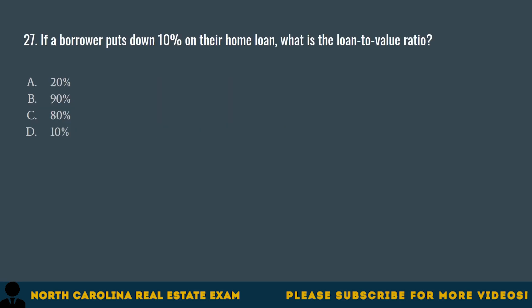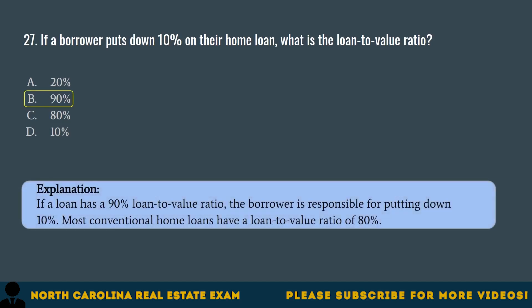Question 27. If a borrower puts down 10% on their home loan, what is the loan-to-value ratio? A. 20%. B. 90%. C. 80%. D. 10%. The correct answer is B. 90%. If a loan has a 90% loan-to-value ratio, the borrower is responsible for putting down 10%. Most conventional home loans have a loan-to-value ratio of 80%.